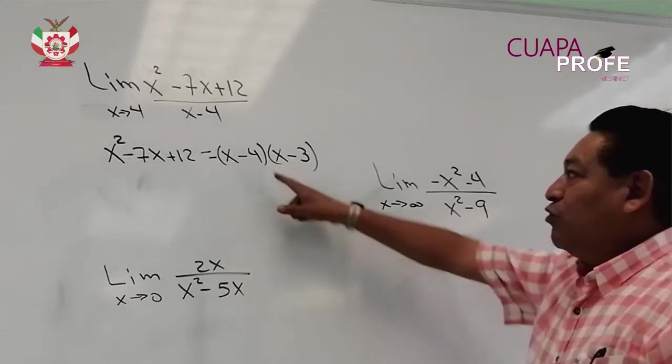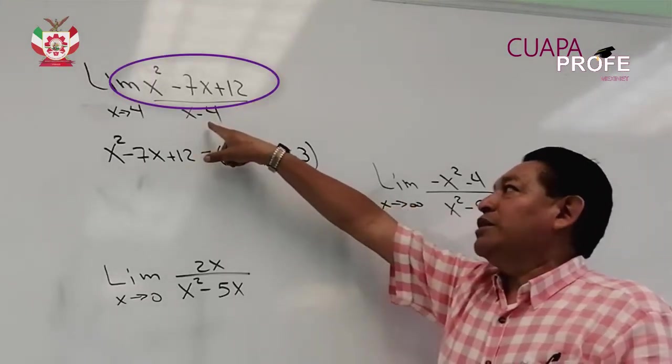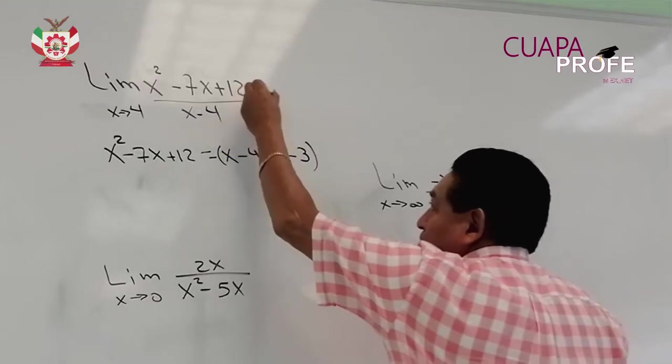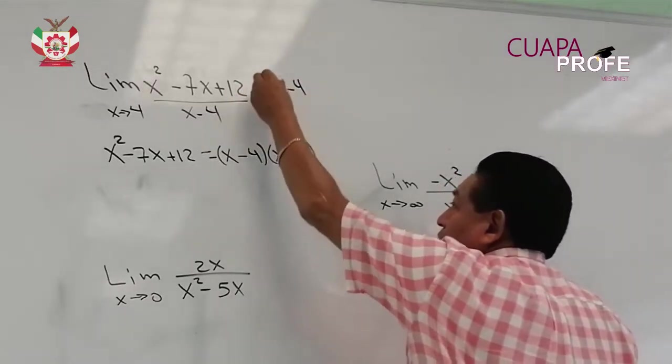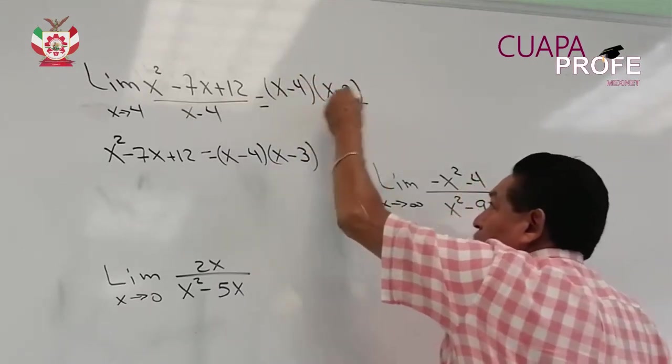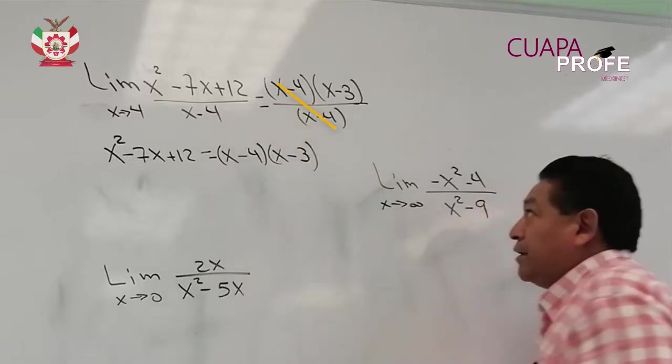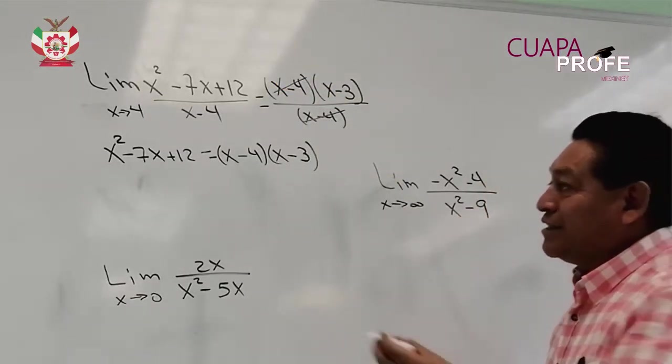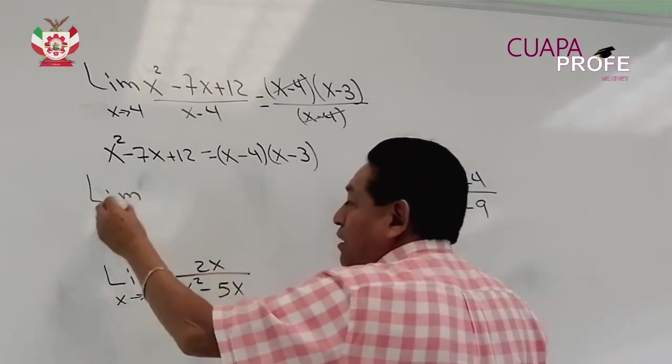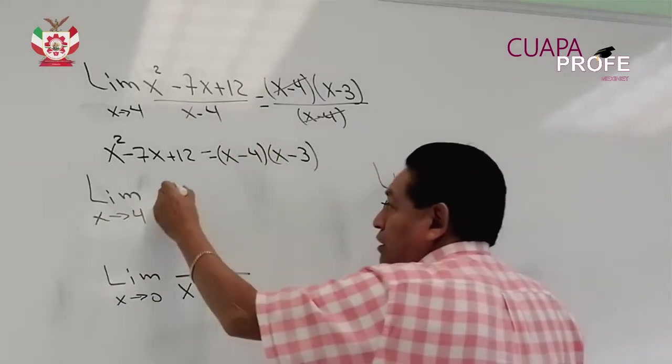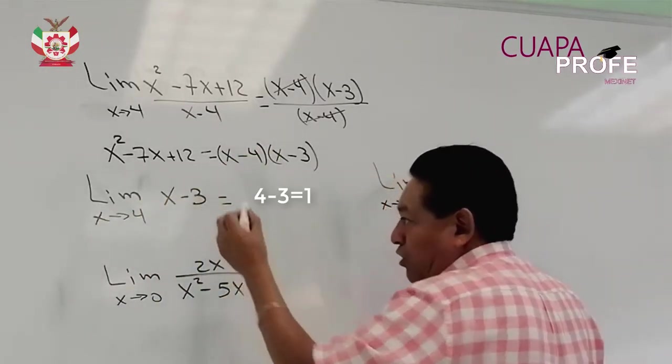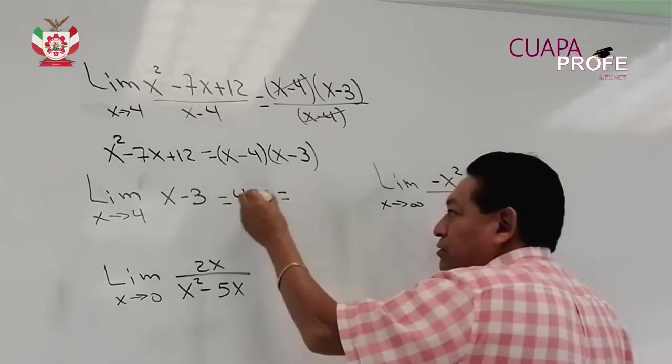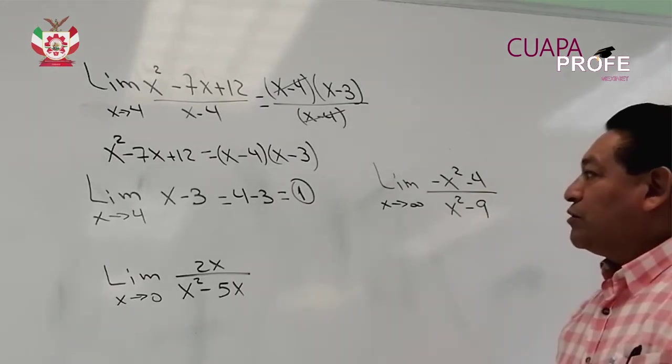De esta manera yo ya tengo un factor que se elimina con el x menos 4 que aparece en el denominador. Ahora esta expresión se convierte en x menos 4 que multiplica a x menos 3, todo dividido entre x menos 4. Al tener ya esta expresión, este x menos 4 con este x menos 4 resulta 1. El límite que estamos buscando ahora será el límite cuando x tiende a 4 de la expresión x menos 3. Sustituimos, en lugar de x escribimos 4, resulta que es 4 menos 3, y por lo tanto, el límite que estamos buscando es 1.